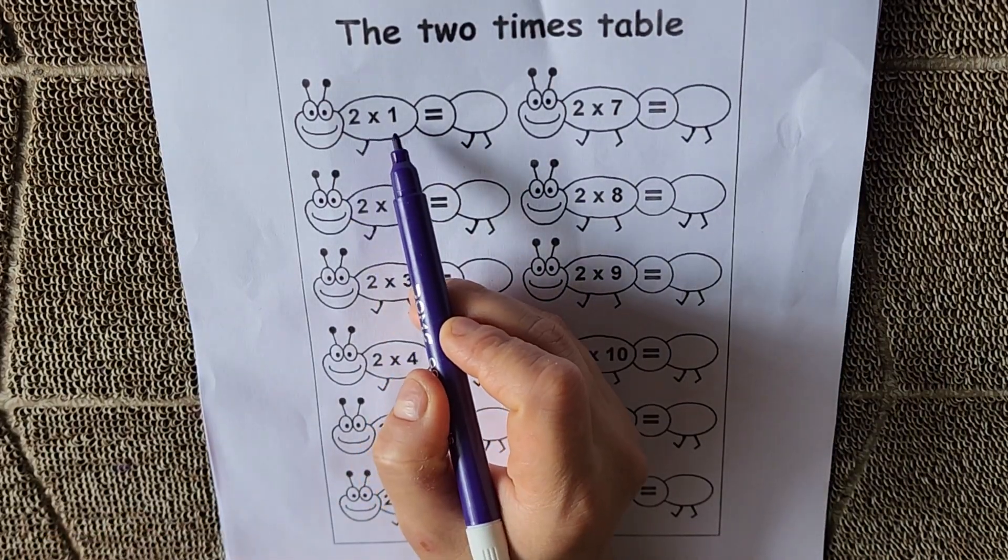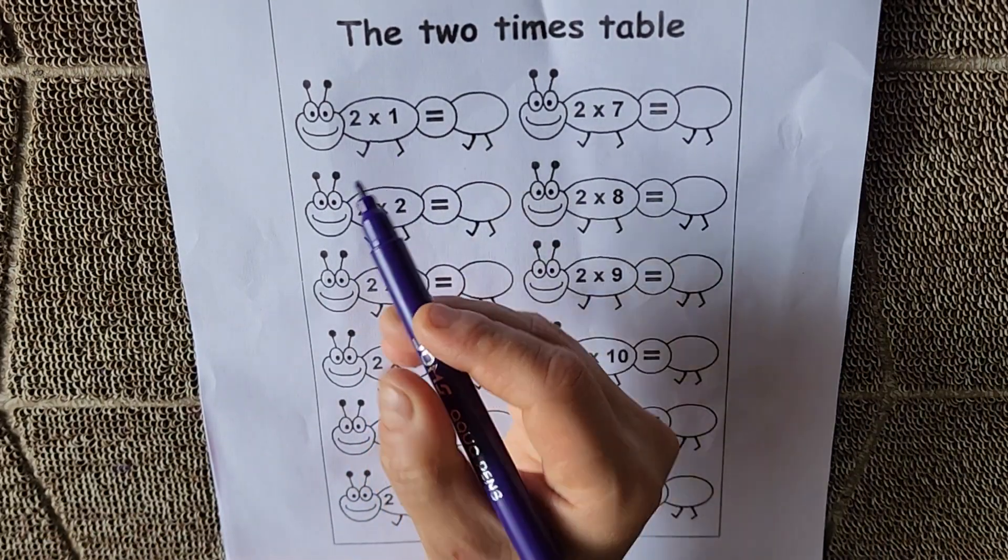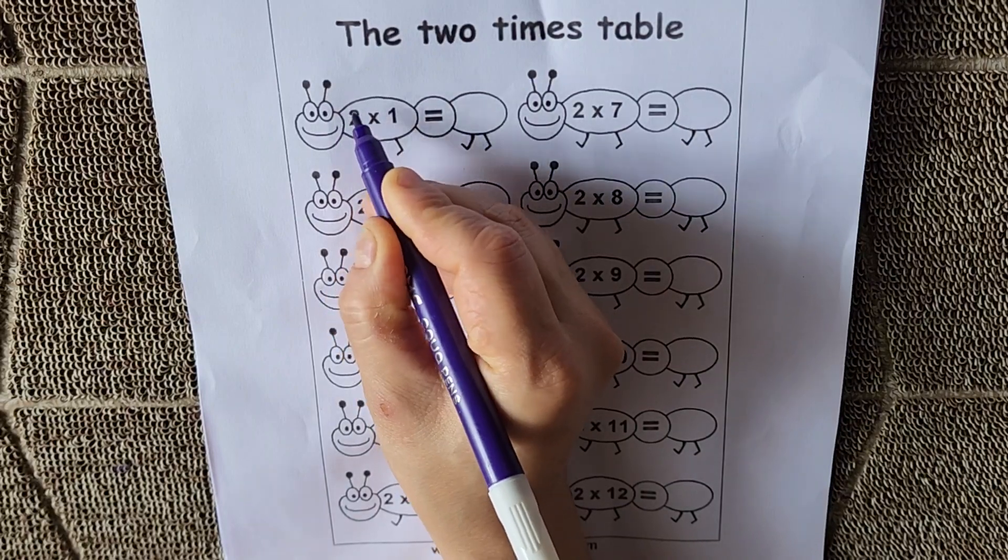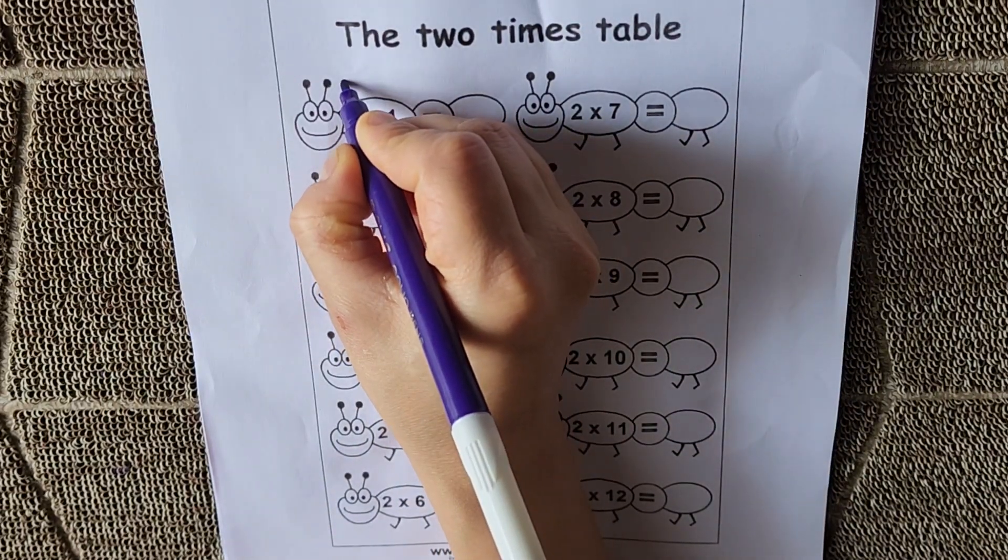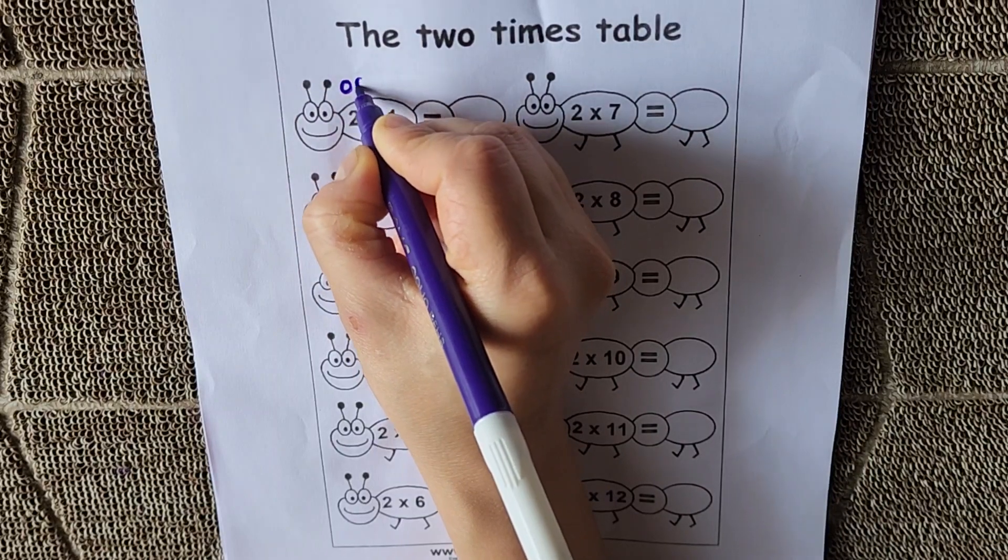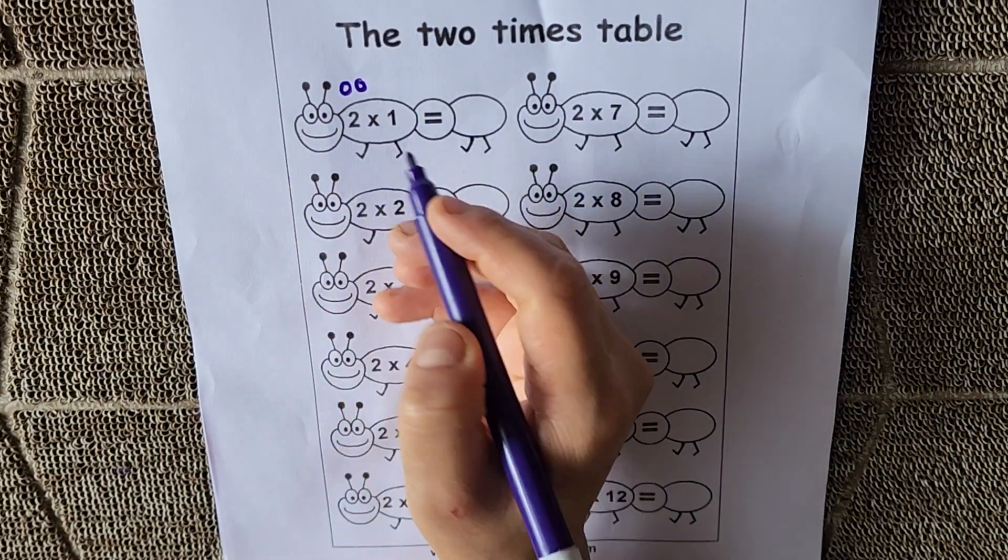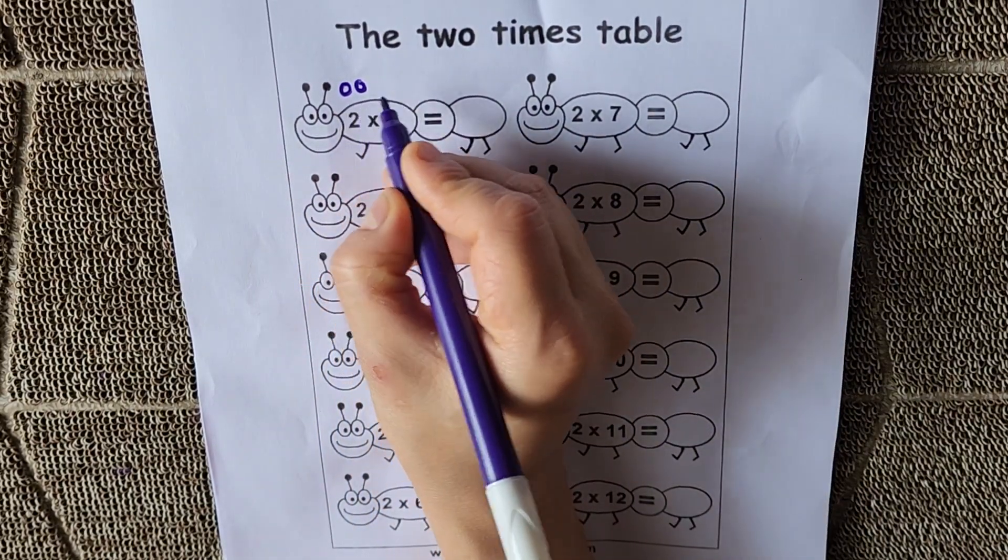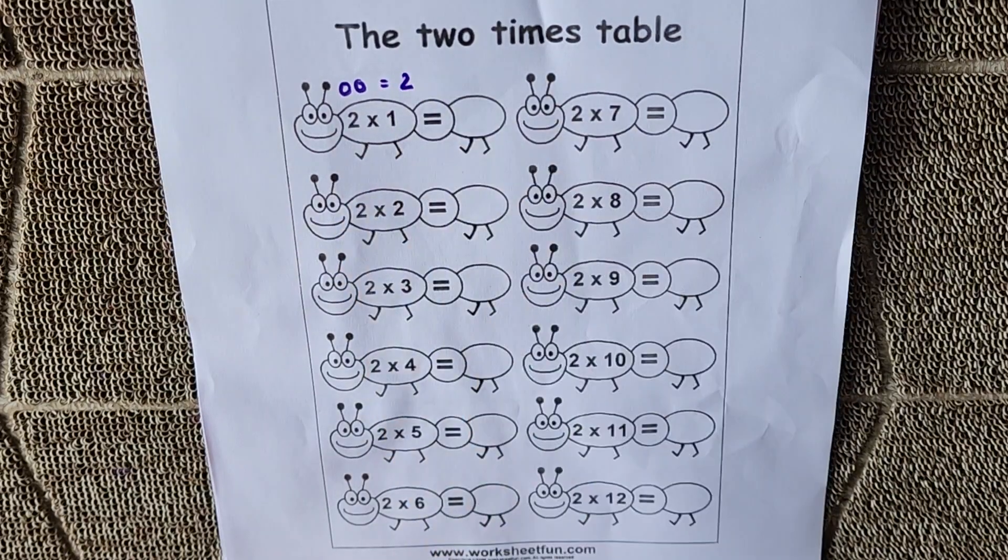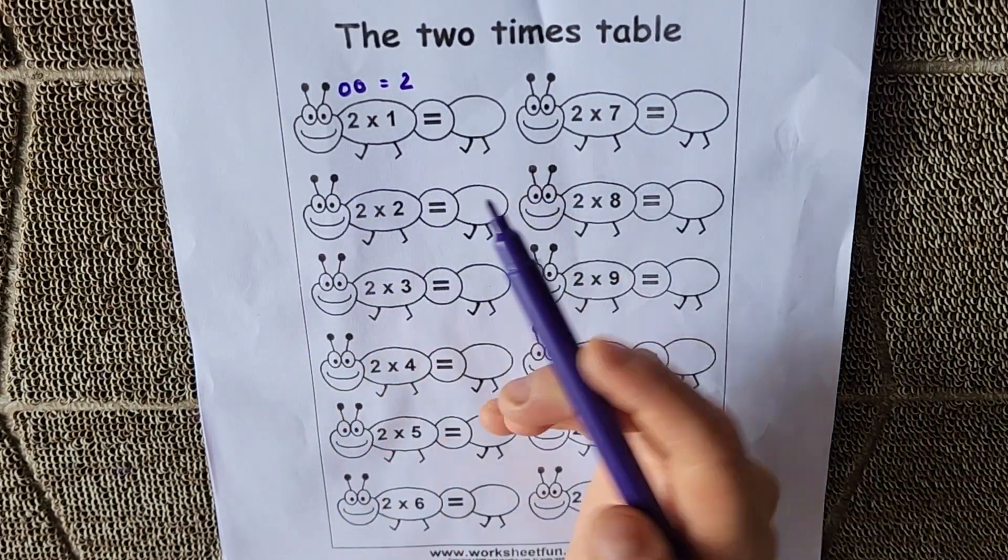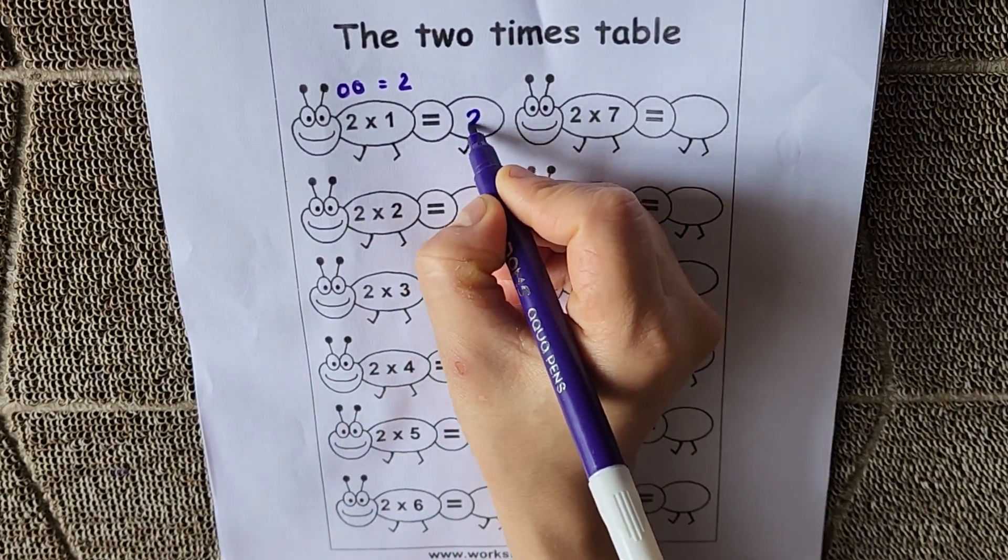Now 2 into 1. 2 into 1 means 2 things. Let's suppose I have balls made. 2 balls. Next, kitne times? 1 time. Right? So 2 ki 2 a jayenge. So 2 1s are 2.